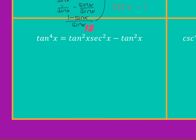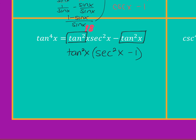All right, 18. What could we start with? Are you going to start left or right? The left — there's not much to do there. But if you look at the right, what do both of those terms have? They both have a tangent squared. So if I take out tangent squared x, I end up with secant squared x minus one. What is secant squared x minus one? Tangent squared. So tangent squared x times tangent squared x — which is tan to the fourth x.